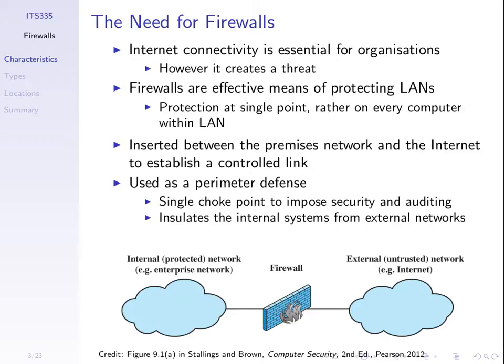Something similar happens from internal computers sending to the external network. As we send packets out through the firewall, the firewall looks at the packet and based upon some rules checks: is this packet allowed to go out? If so, let it through; if not, drop it. For example, if we have a computer in our internal network and we don't want anyone outside to be able to access it, the firewall could be configured to block packets from the external network destined for that internal computer.